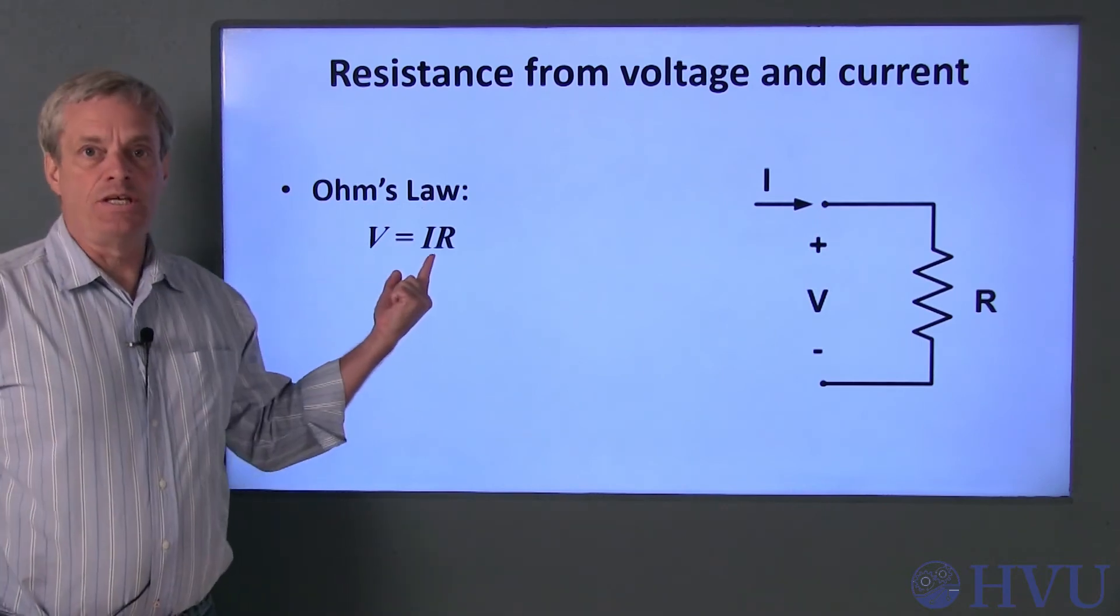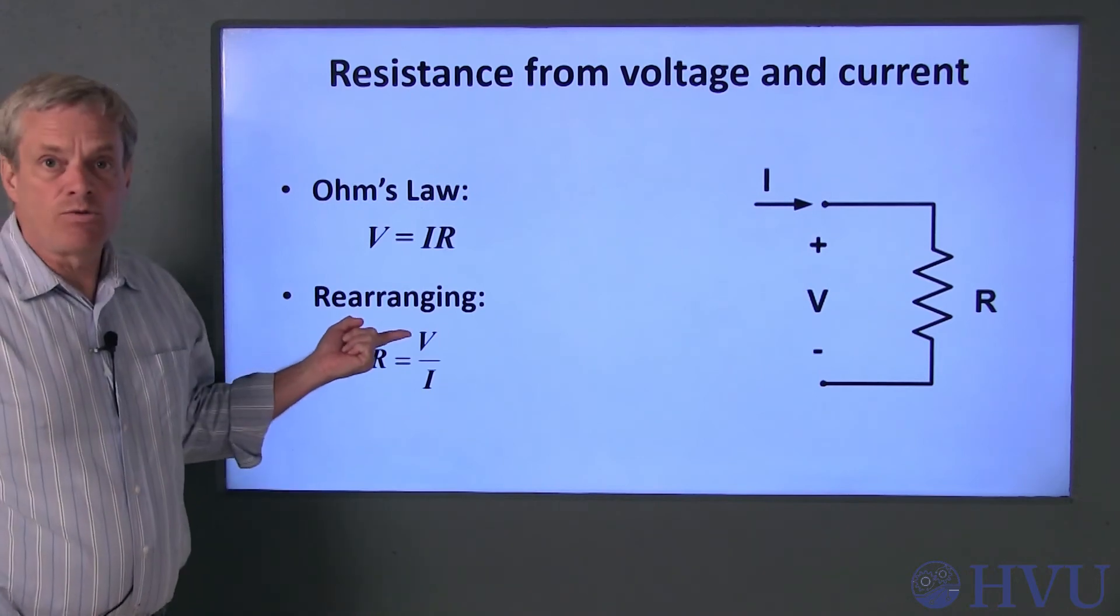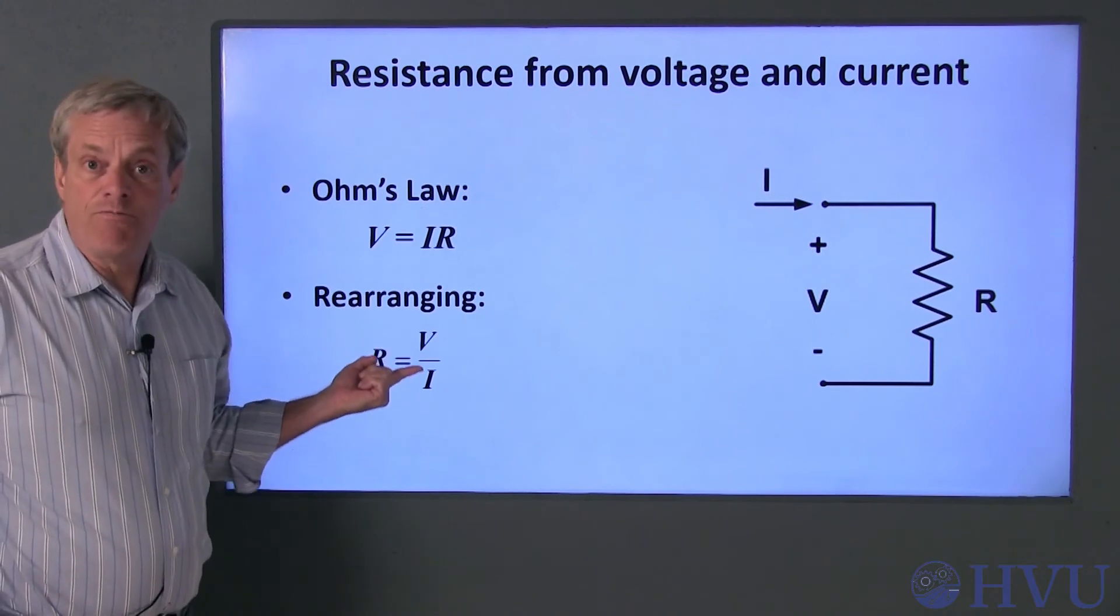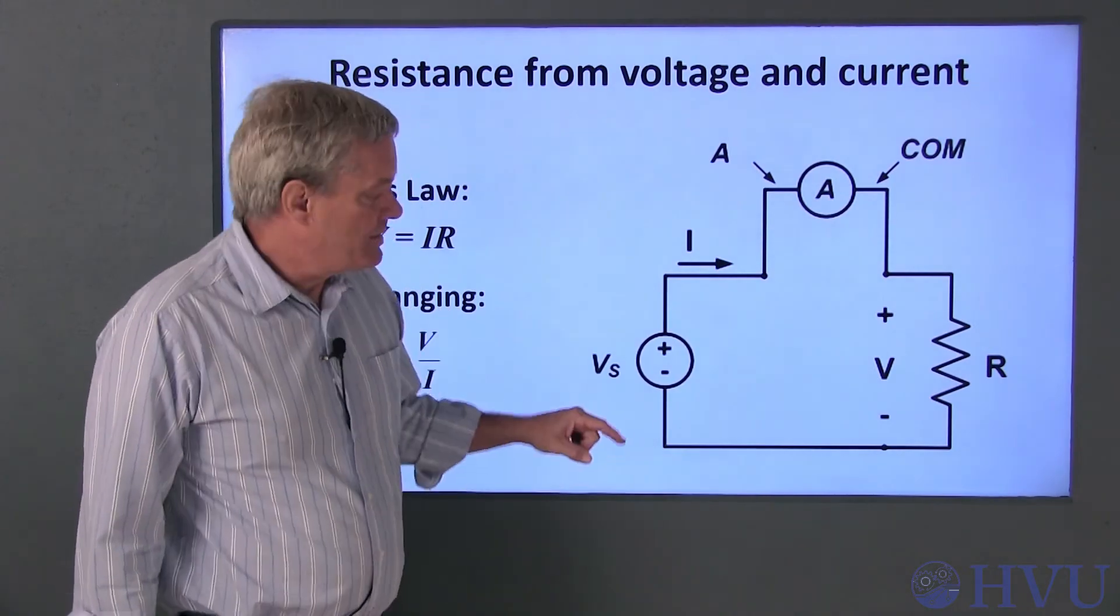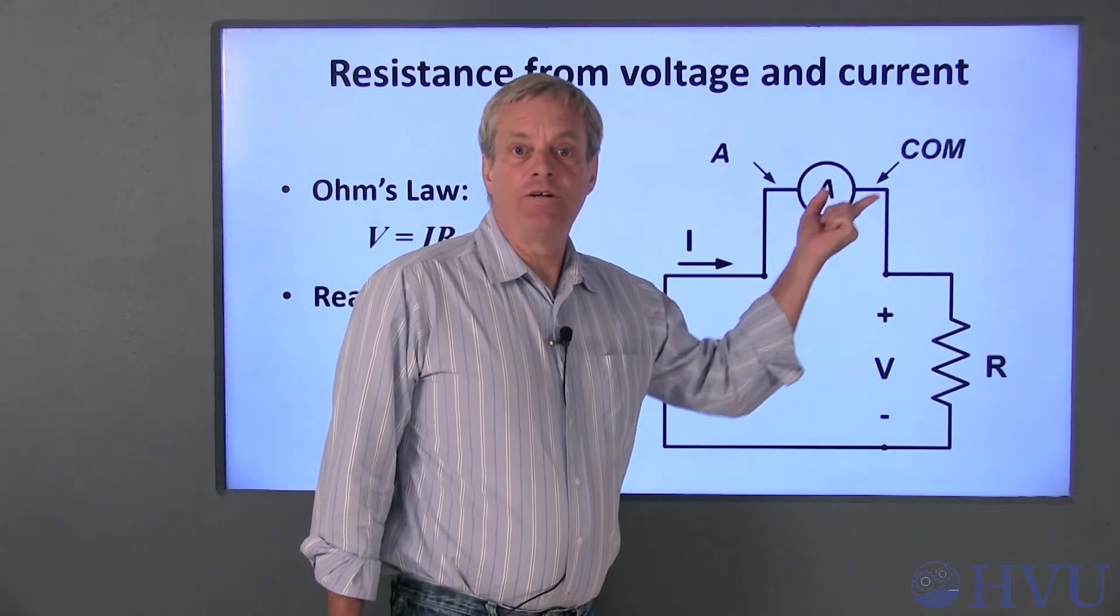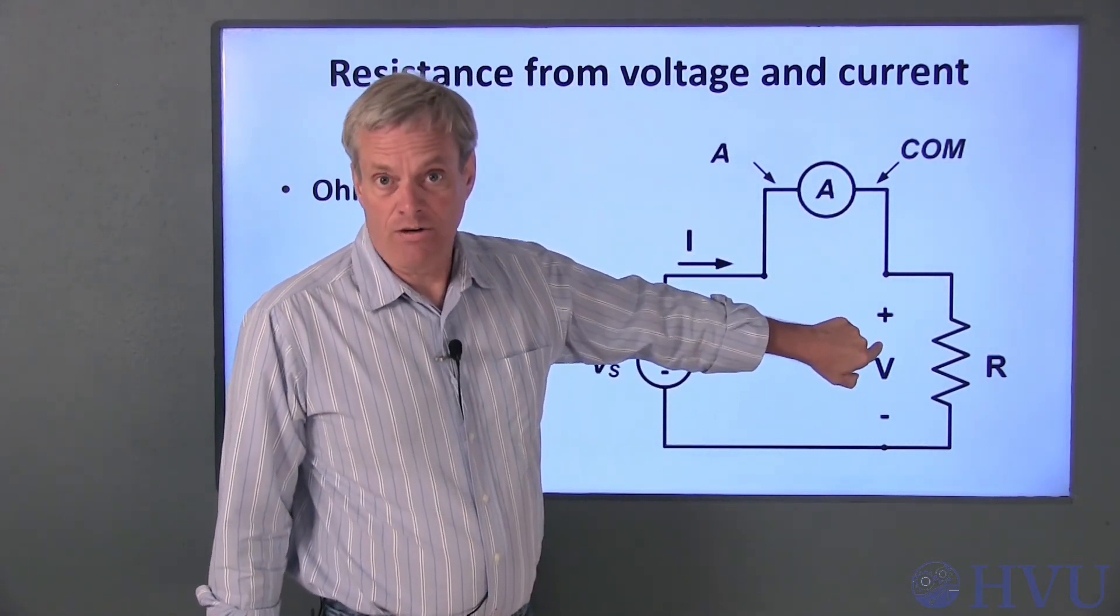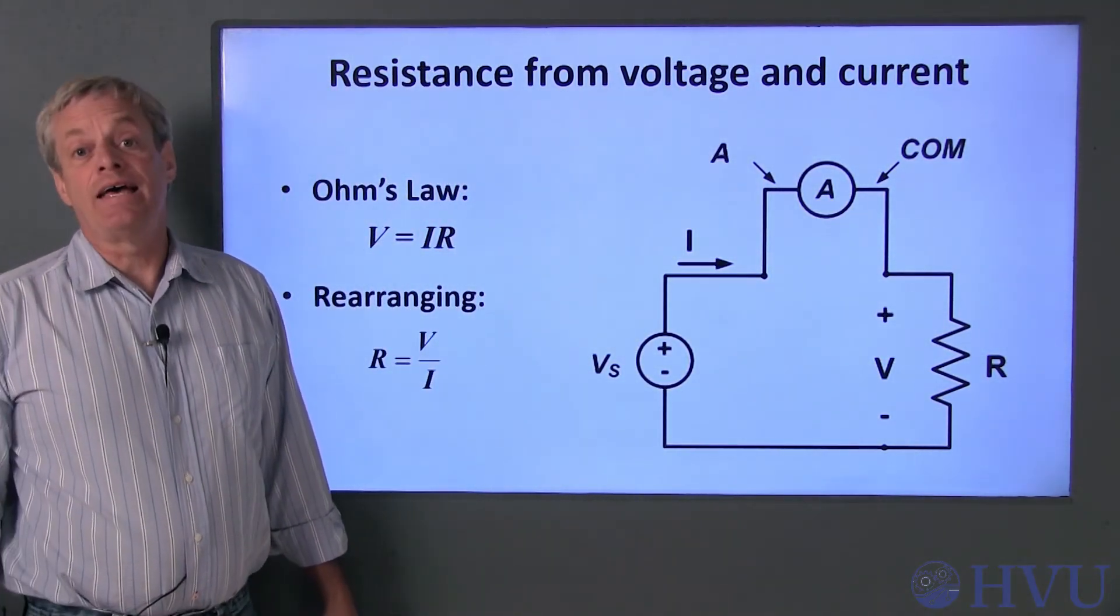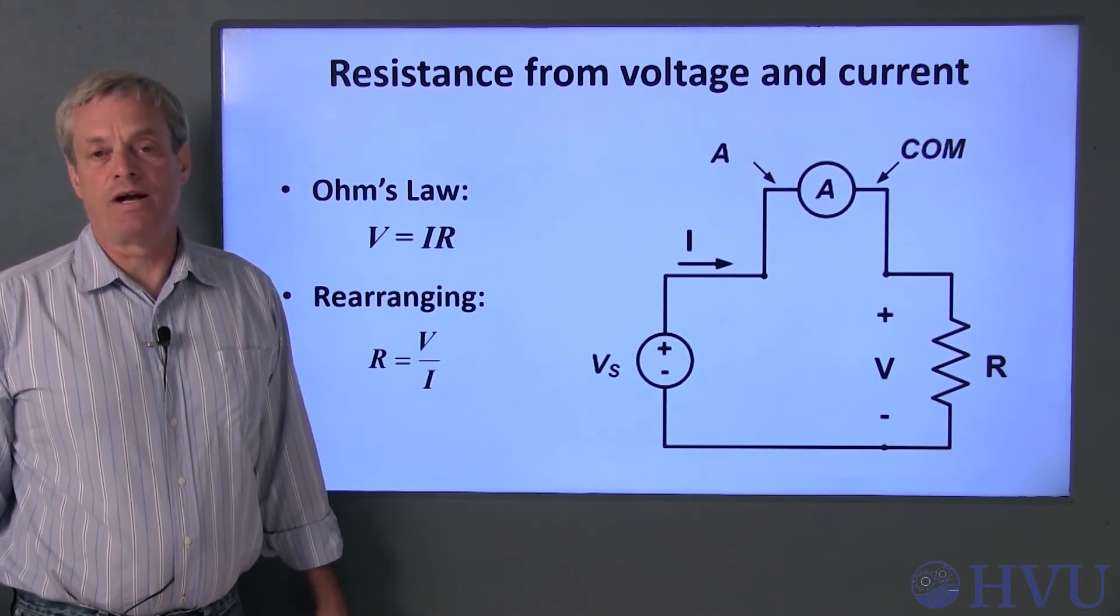Now let's talk about estimating resistance from a measured voltage and current. Ohm's law tells us that voltage is equal to resistance times current. If we rearrange this, resistance is the ratio of voltage across the resistor to the current through the resistor, or R is equal to V over I. This is a circuit we can use to measure resistance. It consists of a voltage source used to apply power to the circuit, and an ammeter to measure the resistor current I. If we measure the voltage V across the resistor, we can use that measured voltage and the measured current to estimate the resistance by taking the ratio of the voltage to the current. I'll demonstrate this process next.